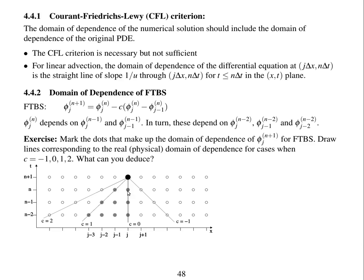Here is the domain of dependence of the forward in time, backward in space scheme. Draw lines corresponding to the real physical domain of dependence for Courant numbers of minus 1, 0, 1, and 2. If the Courant number is 0, there is no wind, so the domain of dependence is a vertical straight line. In this case, the domain of dependence of the numerical scheme does contain this line, so it's stable.